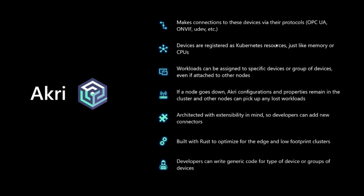In the open source, we have OPC UA, ONVIF, and UDIF. These devices are registered as Kubernetes custom resources, and this allows you to be able to assign workloads to them, whether it be on different nodes. And even if a node goes down, these properties will remain on the cluster so that other nodes can pick up the lost work. Acri is an extensible framework, so developers can create connectors for other protocols using our templates, and it's really optimized for a low resource environment.